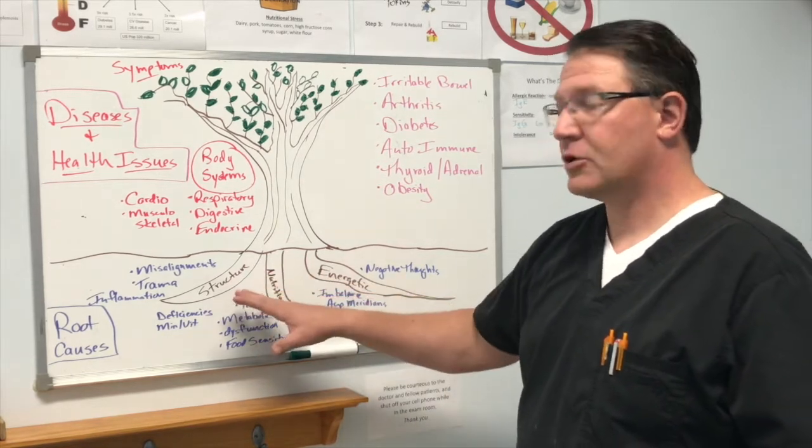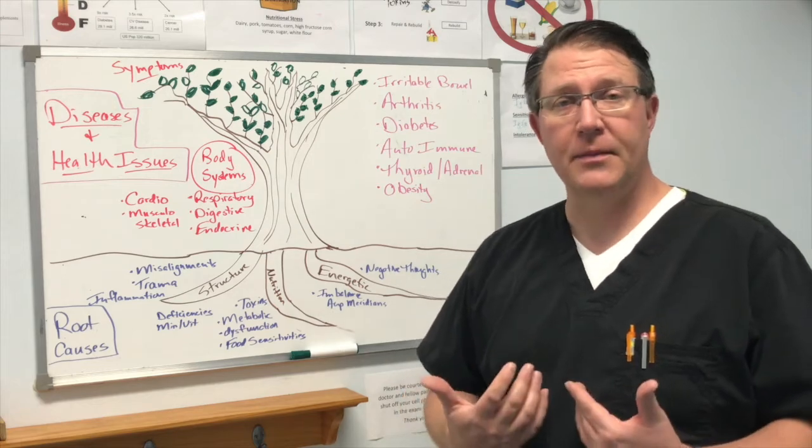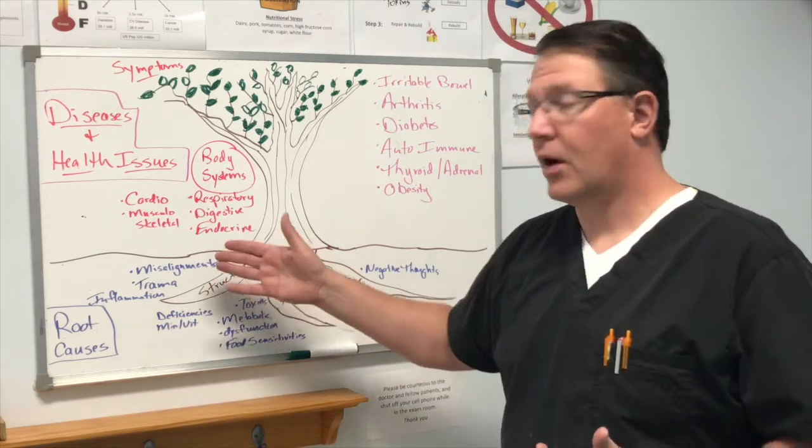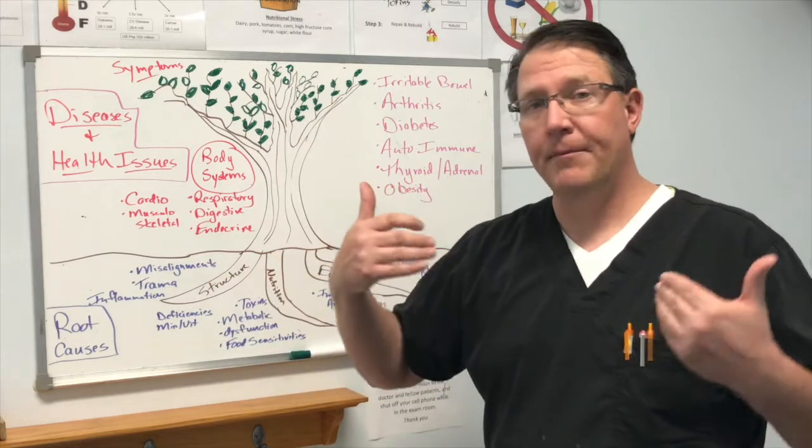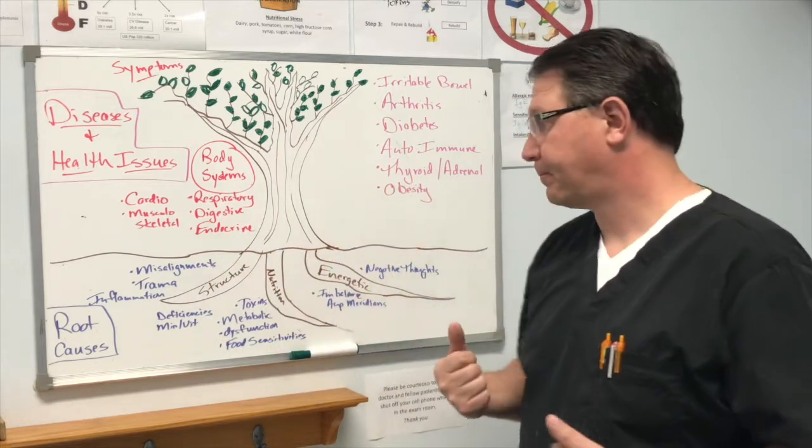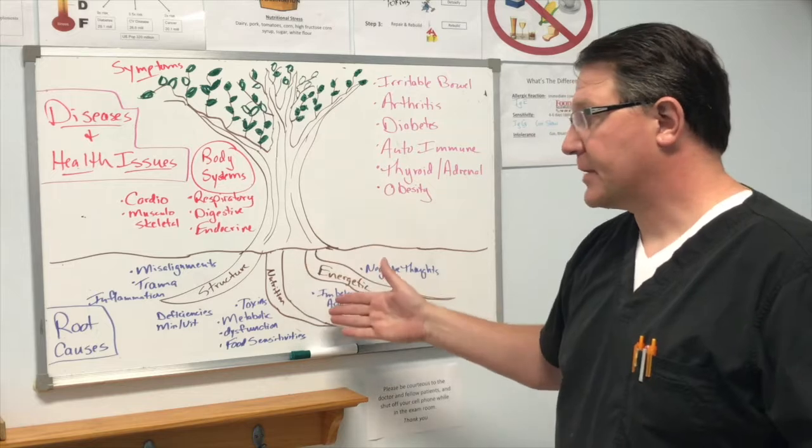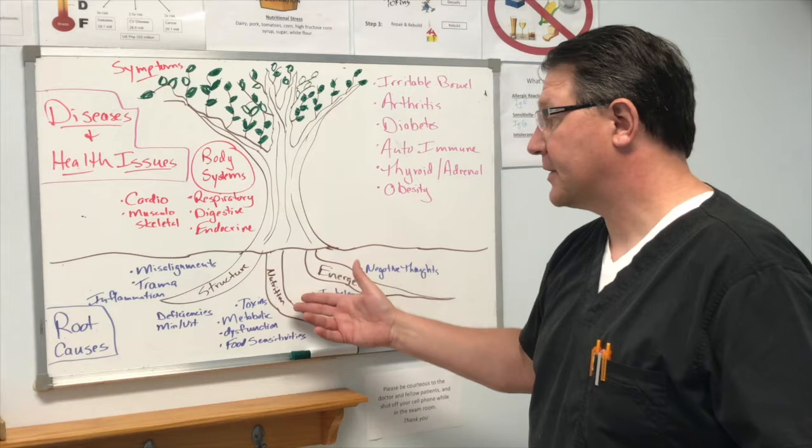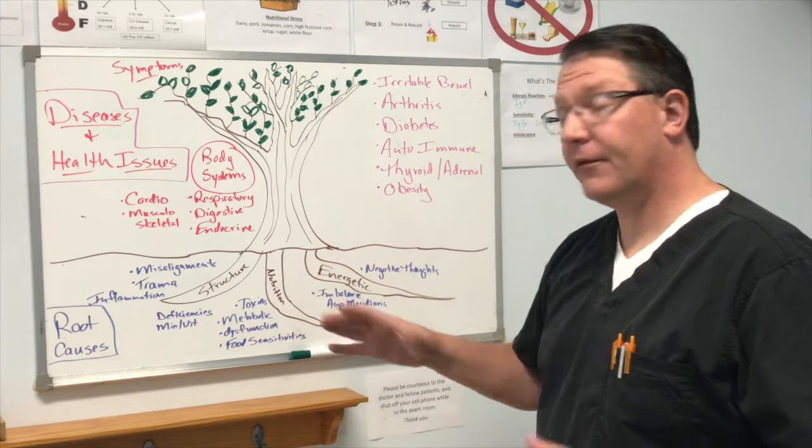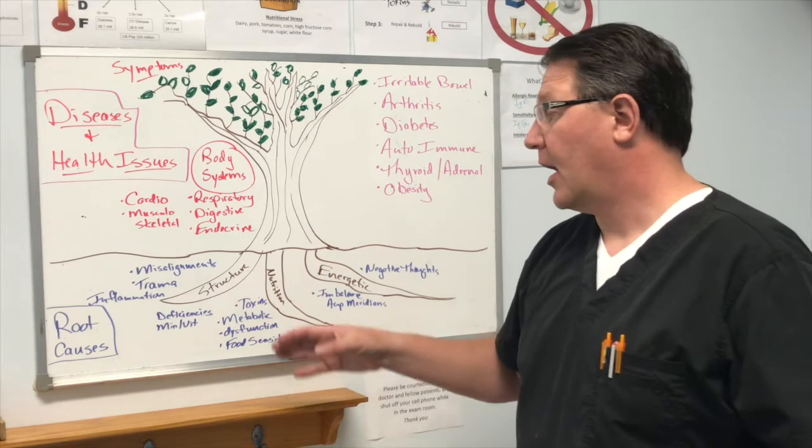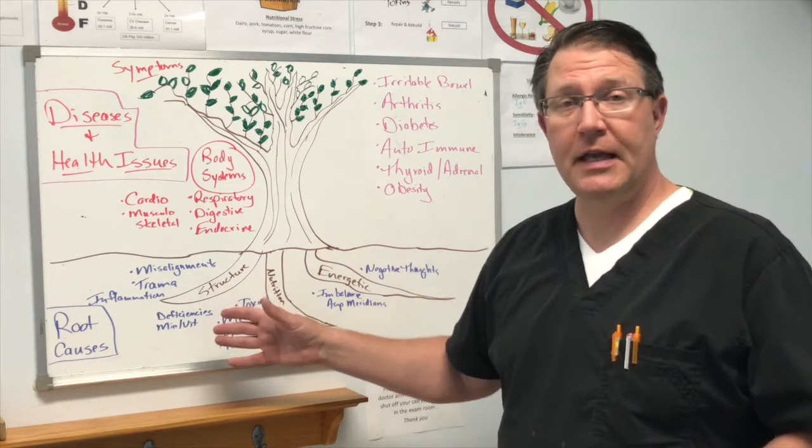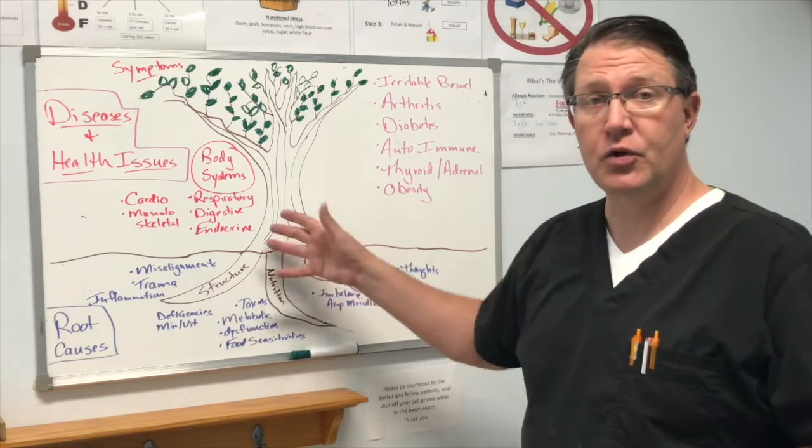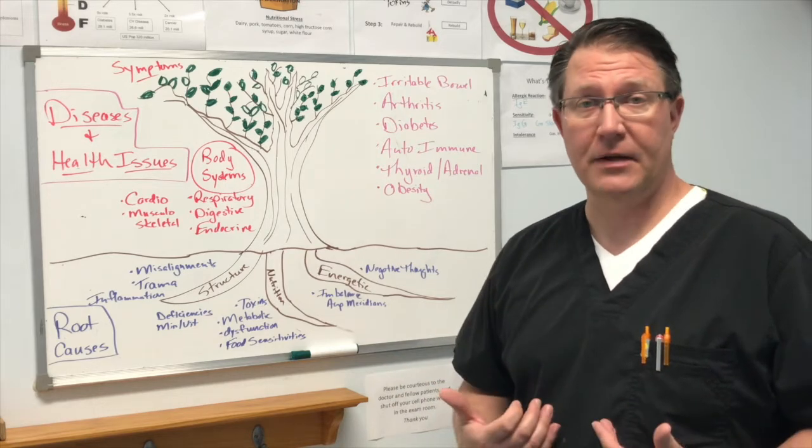So when I'm dealing with body structure as a chiropractor, oftentimes I'm dealing with trauma, inflammation, and it's due to underlying misalignments of the vertebrae, the joints in the body. The nutritional aspect can be many, many underlying issues there, dealing with toxins, metabolic dysfunction, food sensitivities, vitamin or mineral deficiencies. And if those are present, then we'll obviously start to see issues in the nutritional or the chemical aspect of the body.